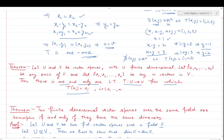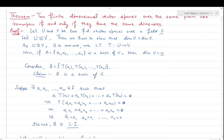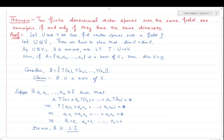Using this theorem, we will prove a very important theorem: two finite dimensional vector spaces over the same field are isomorphic if and only if they have the same dimension. So isomorphic vector spaces have the same dimension. Two vector spaces are isomorphic when there is a one-one onto linear transformation between them, and both must be defined over the same field.